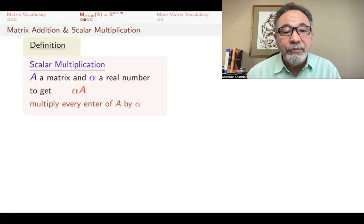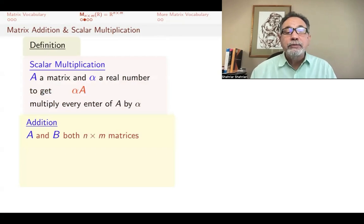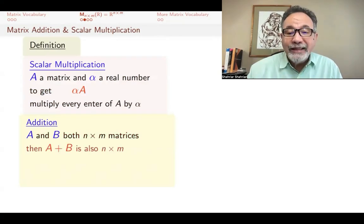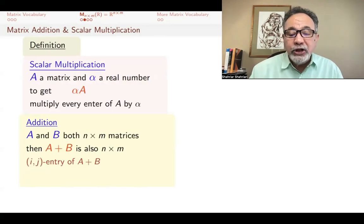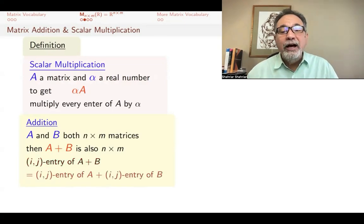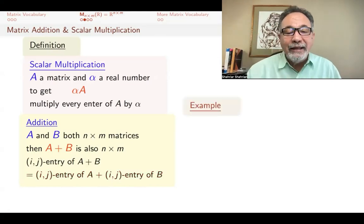How do you do addition if you have two matrices, both of them the same size? You get another n by m matrix, and you add component by component. The ij entry of A + B, the entry in row i column j of A + B, is the sum of the ij entry of A and ij entry of B. You just take the corresponding elements and add them.